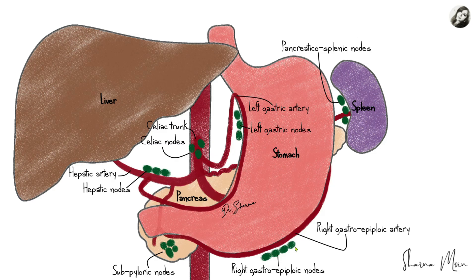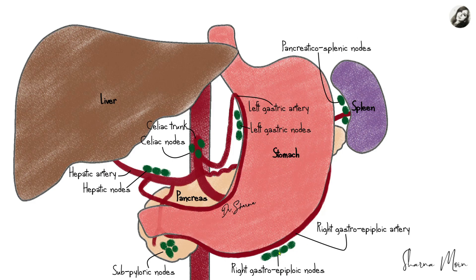On the lower part of the stomach on the greater curvature, we have the right gastro-epiploic artery, also known as the gastro-omental artery, because its branches supply both the stomach and the omentum. The lymph nodes present here are known as the right gastro-epiploic nodes — also called the right gastro-omental nodes — named according to the artery. Below the pylorus of the stomach we have the sub-pyloric nodes, named according to their location; 'sub' means below.